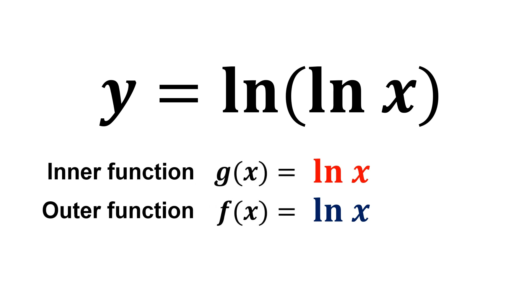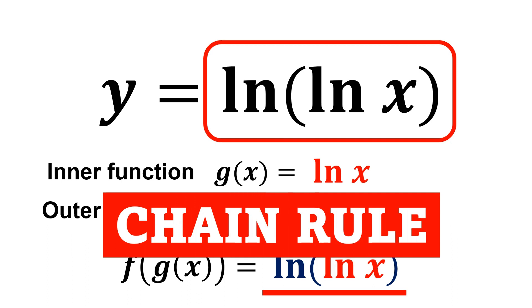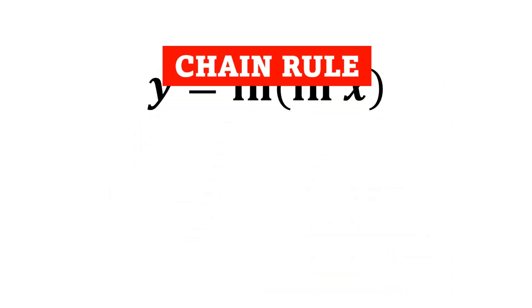Let's say we let the inner function to be g of x, and the outer function be f of x. You see when we place the inner function g of x into the outer function f of x, we will be getting our original function, ln of ln x. Therefore, we can apply the chain rule. Now, let us solve for this together.